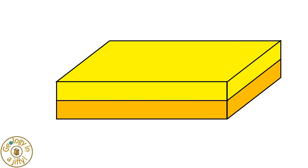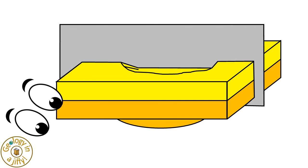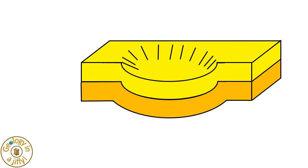A basin starts as horizontal layers but is depressed compared to its surroundings, making a bowl-shaped circular structure, as we can see in cross-section when viewed from the side.